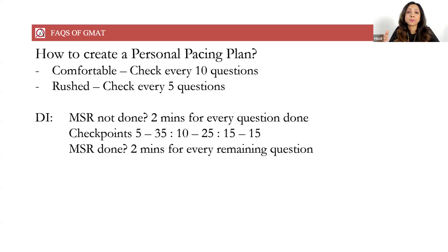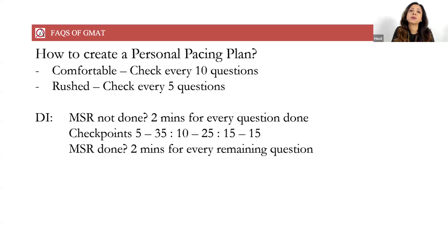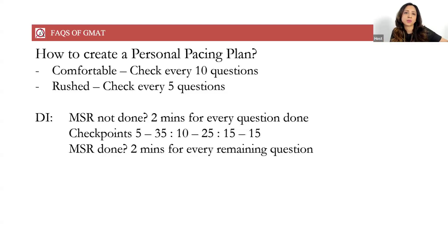Do ensure — and we have discussed this before — that the penalty for an incorrect easy question is extremely high. So we have to ensure that we give every question a fair shot. It's not okay if you have just 30 seconds for a question — what if it is an easy question? 30 seconds may not be enough to answer it. So ensure that you have two minutes for every remaining question. In any section, you should typically have about two minutes for every question. Other than MSR, every DI question should not take more than two minutes.